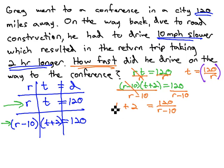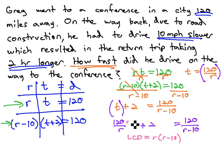We're now set up to make a substitution, replacing t with 120 over R. 120 over R plus 2 equals 120 over R minus 10. We now have an equation we can solve by multiplying by the least common denominator of R, R minus 10. R, R minus 10 on both sides by every term, including the 2.